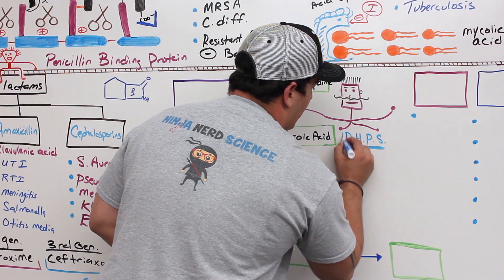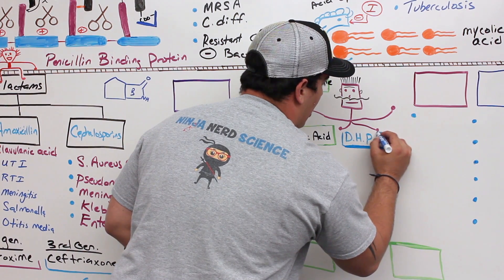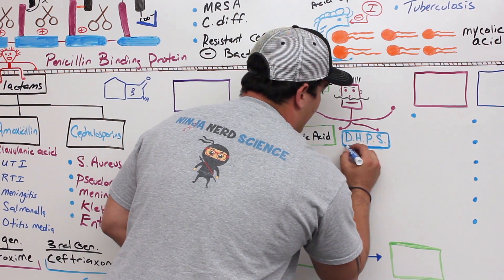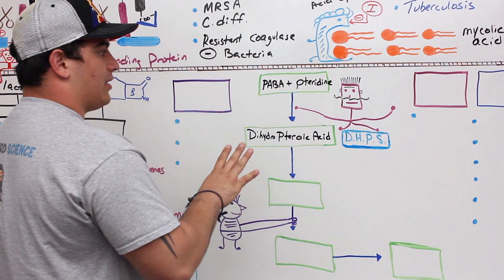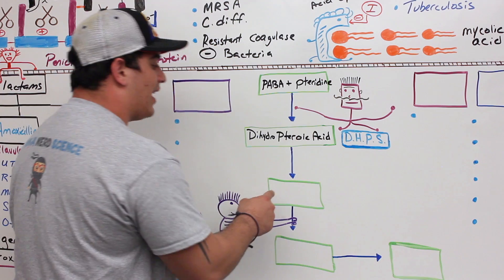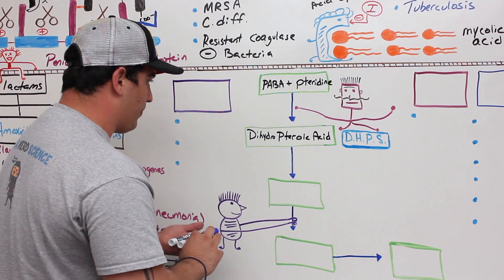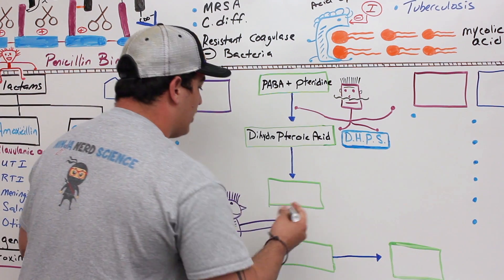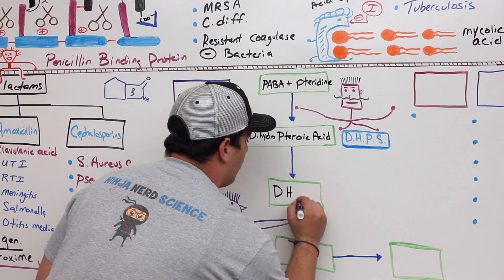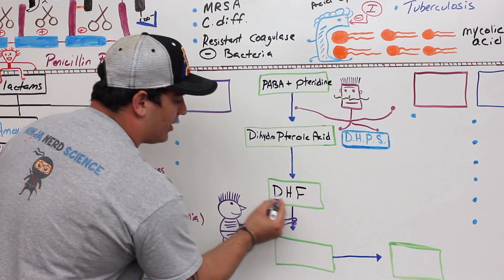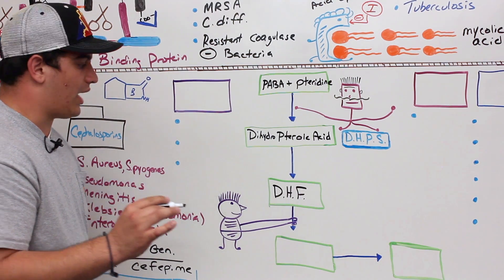So what is this enzyme doing? It's taking para-aminobenzoic acid and pteridine and converting them into dihydropteroic acid. Then dihydropteroic acid is actually converted into a specific structure — it's converted into what's called dihydrofolate, or dihydrofolic acid.